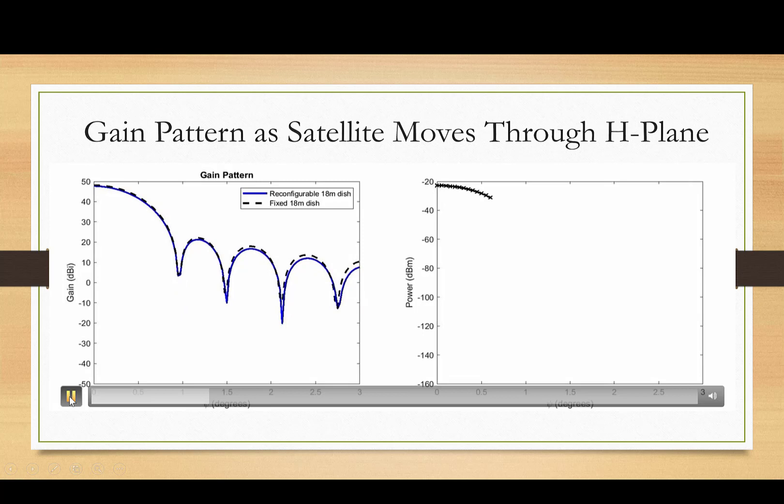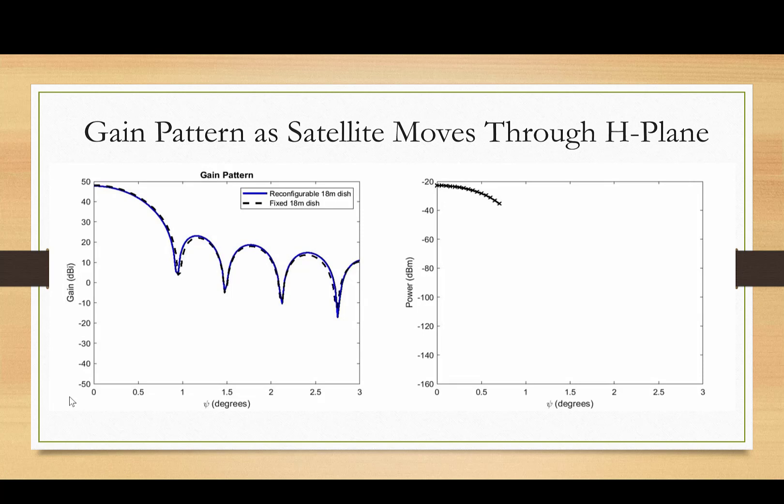So here we can see the pattern changing as the source moves through the main beam. Now as it moves through the main beam, there is insufficient power scattered by the rim of the dish to cancel that main lobe, but this is fine because we wouldn't want to cancel the main lobe anyway.